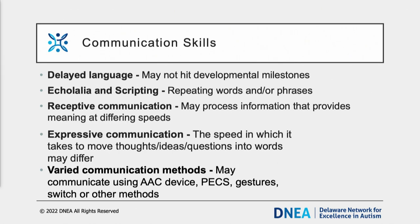Some areas of need in communication skills include language development slowing or not progressing. A child with autism often will not reach developmental milestones related to communication. Echolalia — the repetitive words or phrases such as repeating a question instead of answering it or excessively reciting from movies, cartoons, or commercials — is common. Individuals can use varied communication methods including augmented or alternative communication devices or AAC, the picture exchange communication system, as well as gestures or switches. Individuals with autism may also have difficulty understanding sarcasm or metaphors — for example, 'take a seat' could be interpreted as picking up the chair.